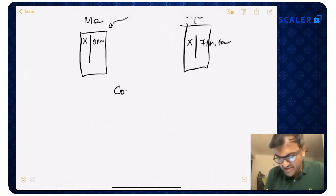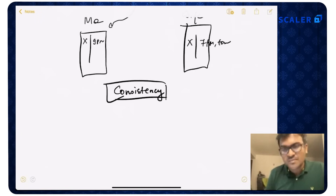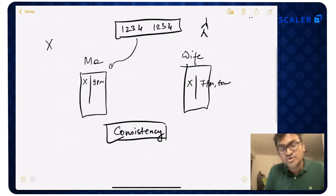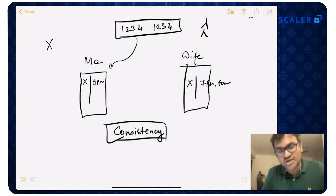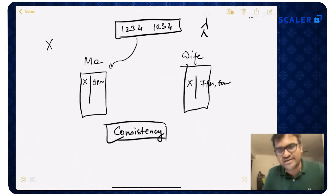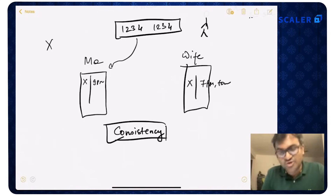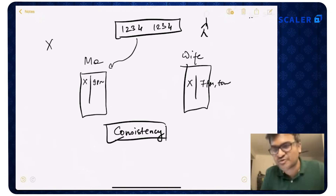This is what is called the consistency problem — the data consistency problem — which is an end consumer might have stored some data, and when they ask me back, there is no guarantee they will get the data back because it depends on where the request comes to. If the request comes to my wife, they'll get the data back. If the request comes to me, they won't get the data back. This is a big problem. If not solved, my company will die. So I start to think and I come up with a solution.